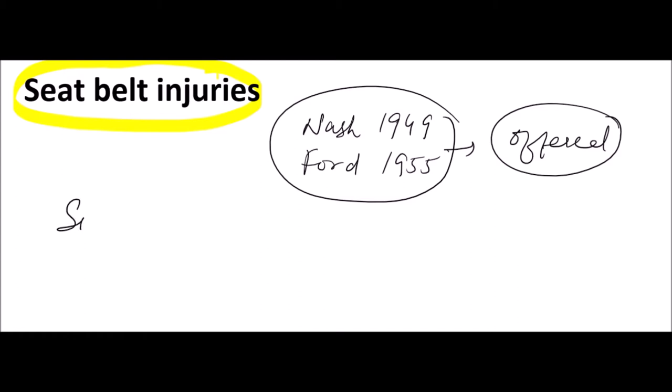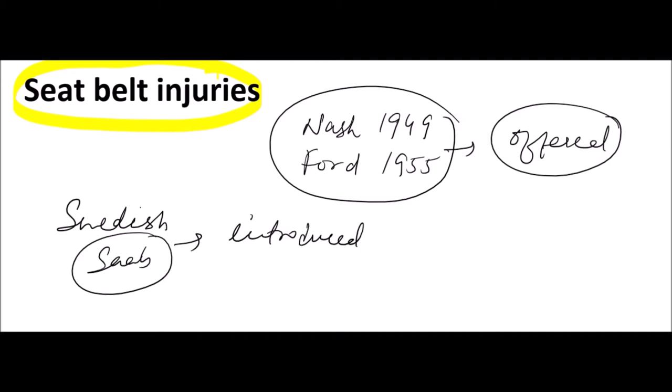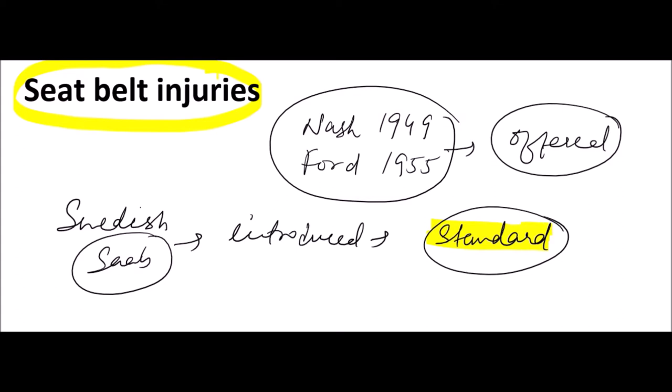After that, the Swedish company Saab introduced seat belts and was the first company to make seat belts standard in their motor vehicles.